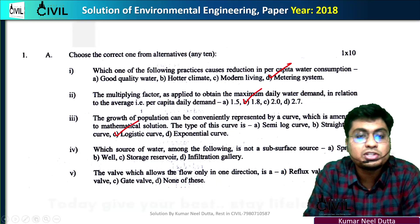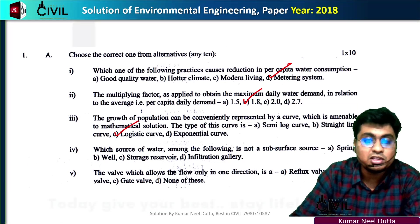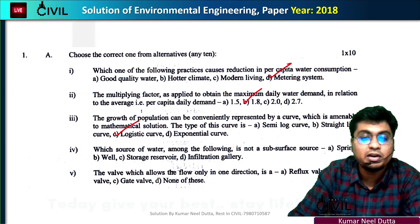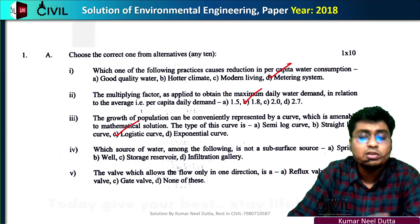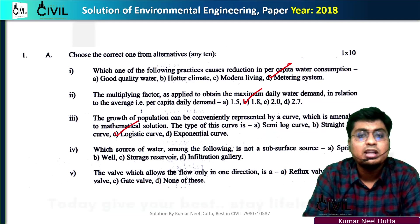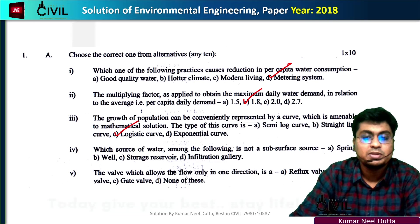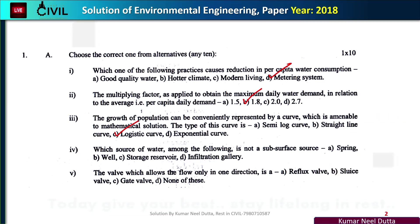Number 4: which source of water among the following is not a subsurface source? Subsurface sources include river, storage reservoir, infiltration gallery, well, spring, and tube well. Among these, spring, well, and infiltration gallery are subsurface. So 'not subsurface' will be storage reservoir.